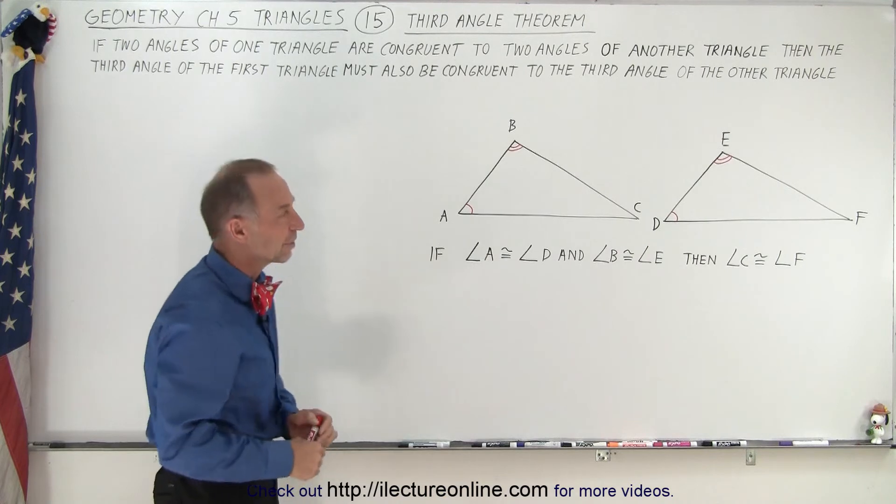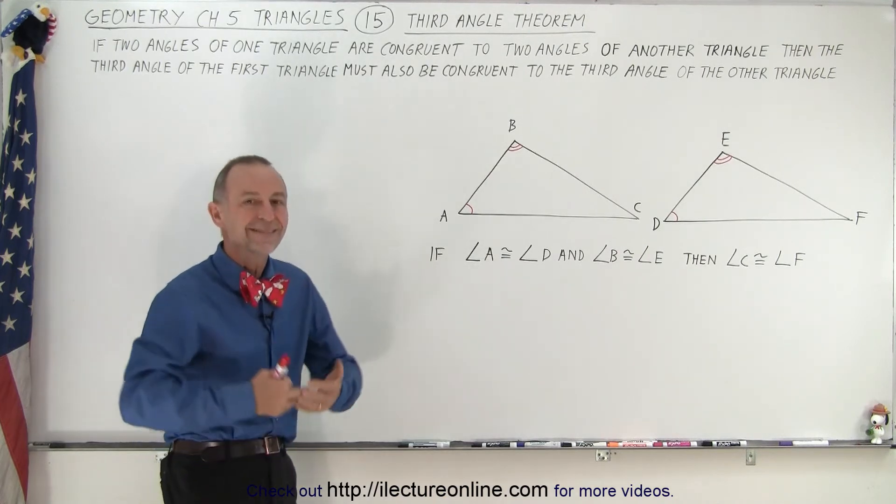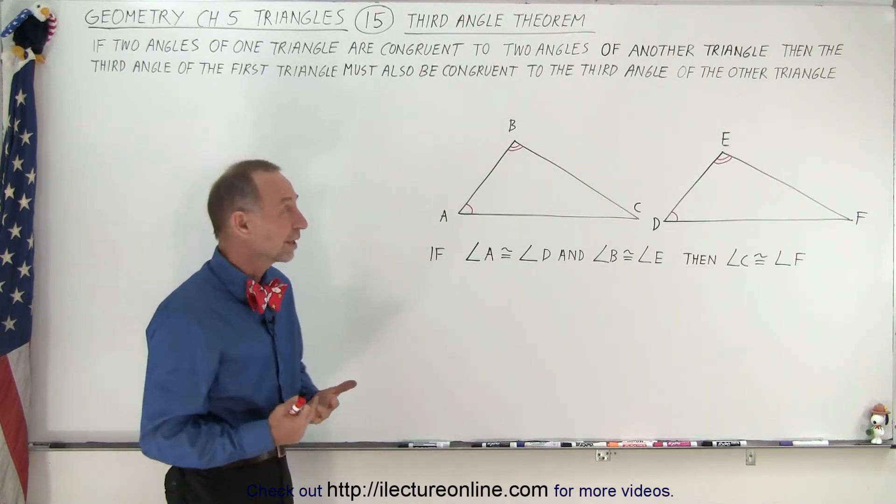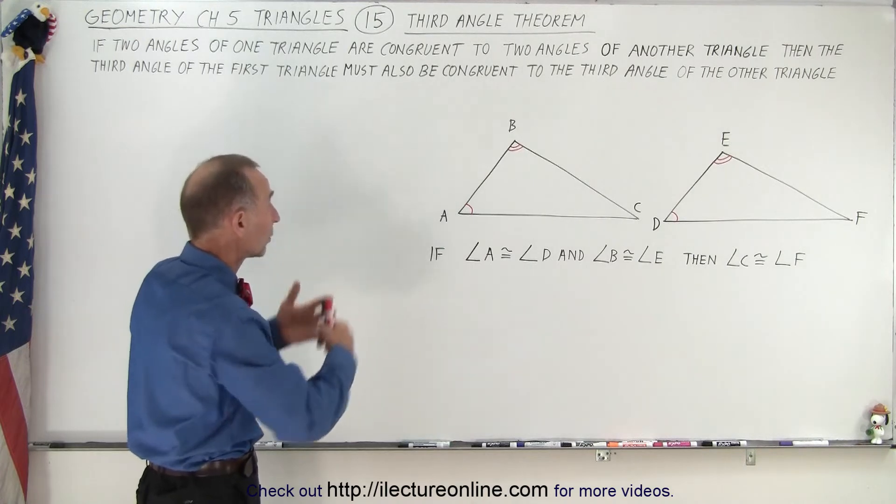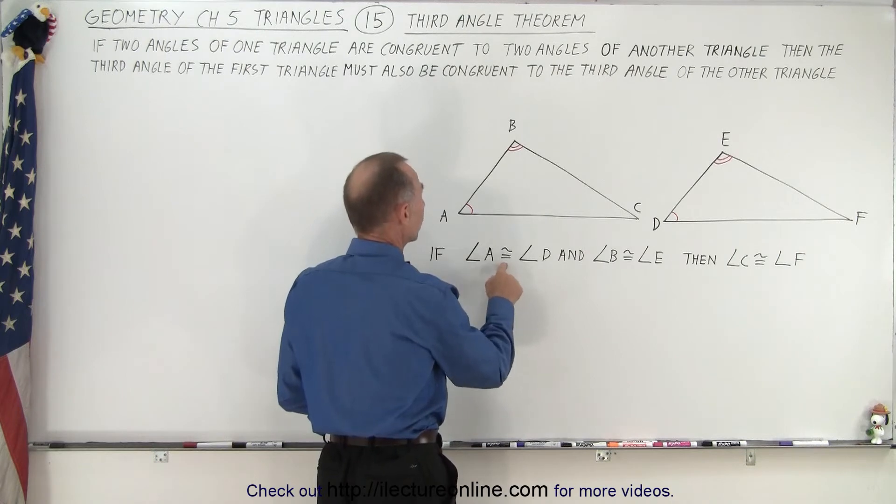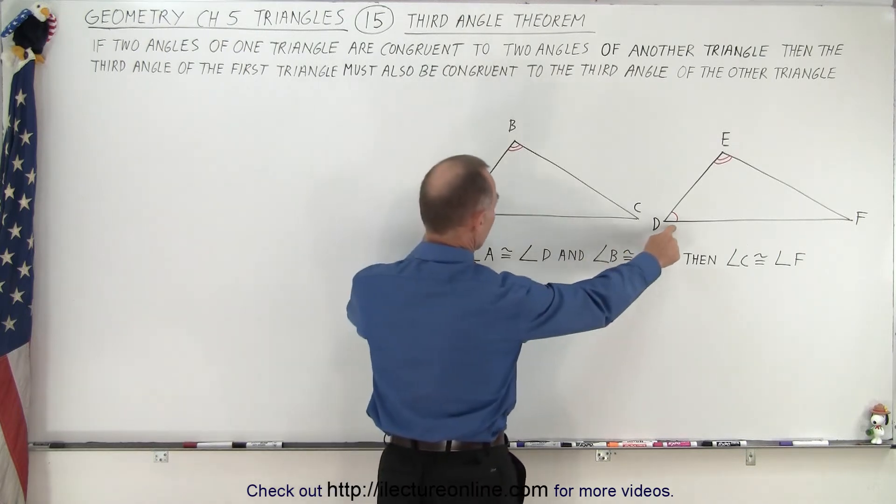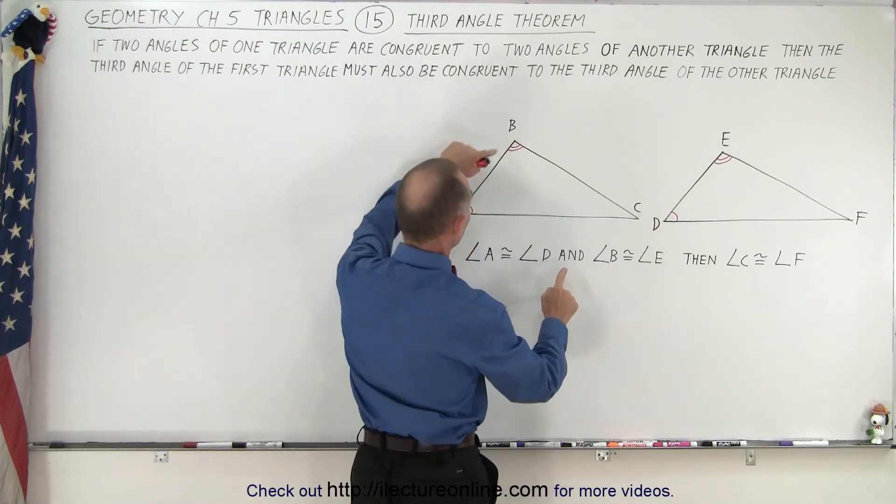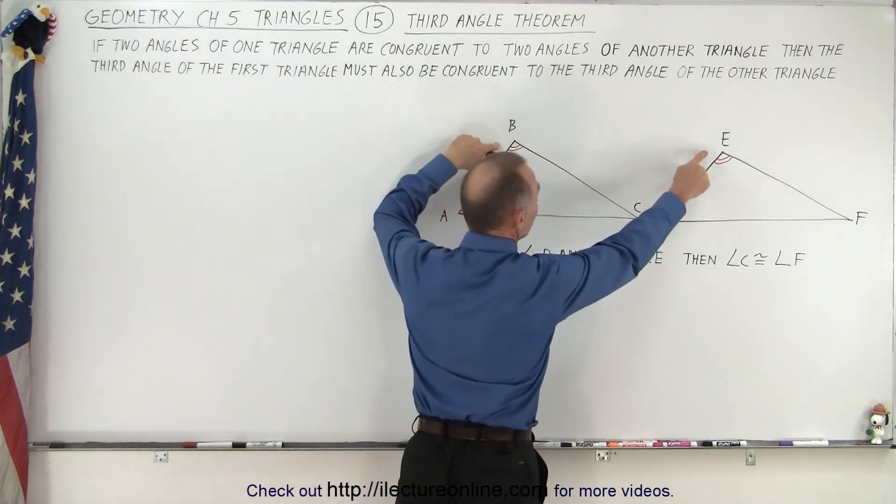same. It seems kind of obvious, but it needs to be stated as a theorem, so there it is: the third angle theorem. And here we can say that if the measure of angle A is congruent to the measure of angle D, and the measure of angle B is congruent to the measure of angle E,